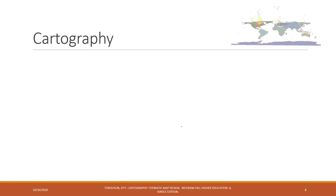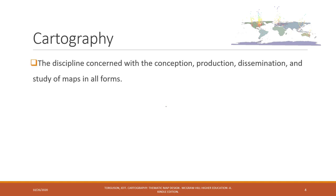Cartography is one specific type of data visualization that creates maps. It is a discipline concerned with conception, production, dissemination, and the study of maps in all forms. Based on the definitions from this textbook, maps are geographic representations of the culture and physical environment.